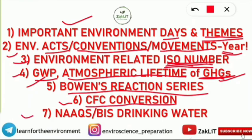Number seven is National Ambient Air Quality Standards (NAAQS) and Bureau of Indian Standards (BIS) for Drinking Water. You should know the important elements for both. These two are very, very important.